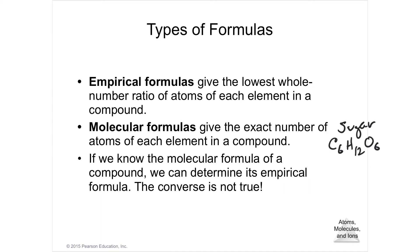This is telling you that in one molecule of sugar, there are six carbons, 12 hydrogens, and six oxygens. The empirical formula is the lowest ratio, whole number ratio, of the atoms in an element, or in a compound.